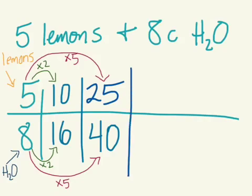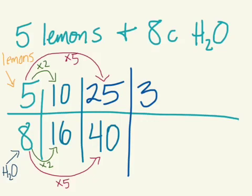Now let's get even trickier. Let's say on a certain day, poor Emma only has 3 lemons. How much water does she need to make her exact recipe? We don't want the lemonade to be too strong or too diluted — either way it wouldn't taste very good, and people probably wouldn't want to drink it. So how do we figure out exactly how many cups? We know it's going to be less than 8 cups, and there's no way to get from 5 to 3 by multiplying or dividing by a whole number.